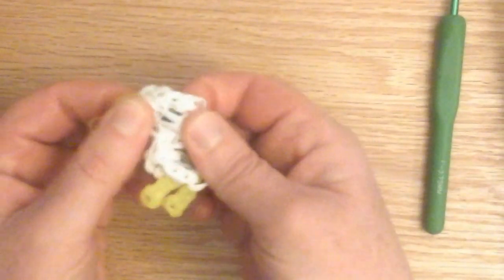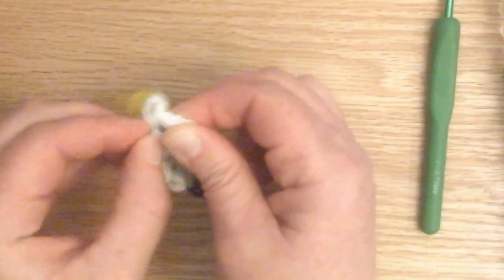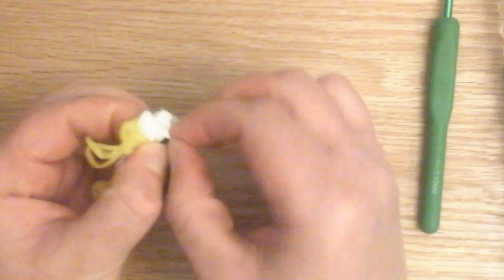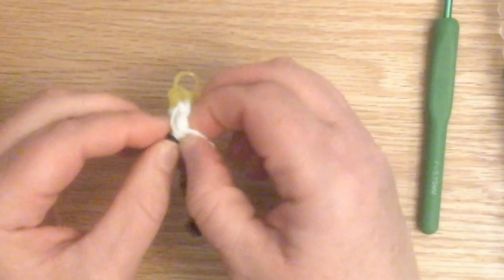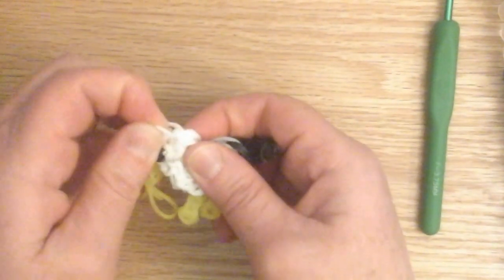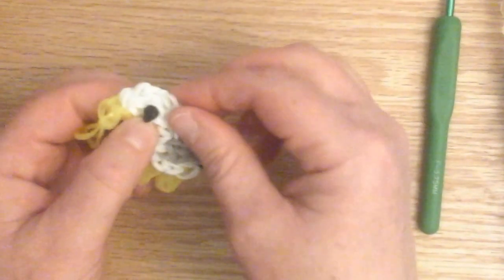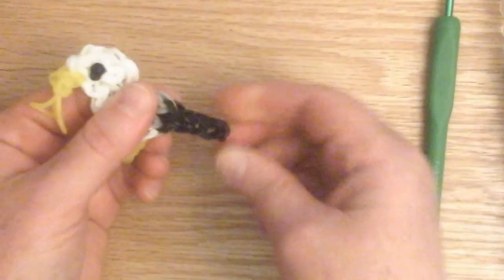This is right off the loom. You have the eyeball right here. Put it through those bands. Fix the bands, stretch them out a little bit. Stretch out the tail.